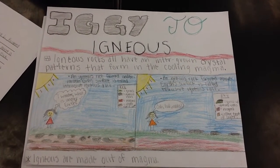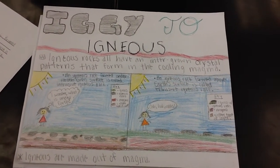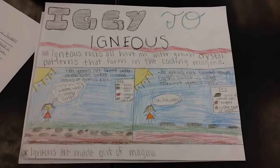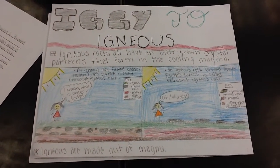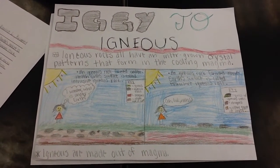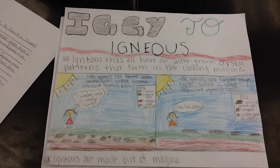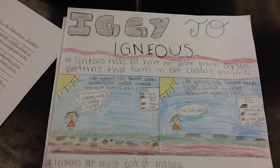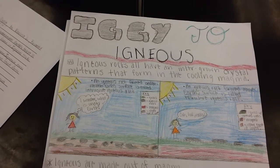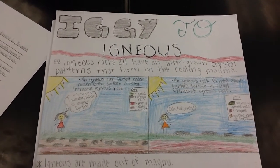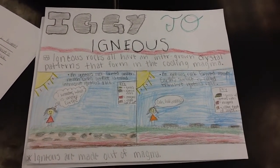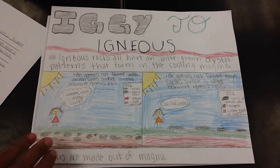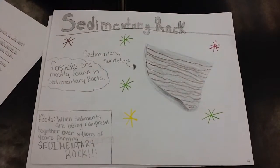An igneous rock formed underneath Earth's surface is called intrusive igneous rock. An igneous rock formed above Earth's surface is called extrusive igneous rock. Igneous rocks are made out of magma.